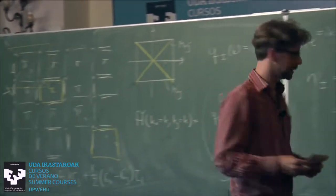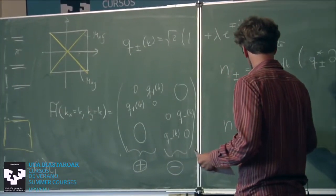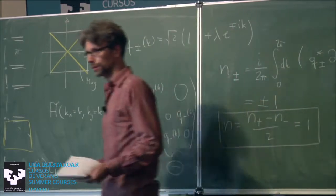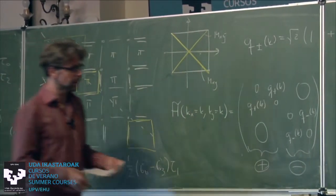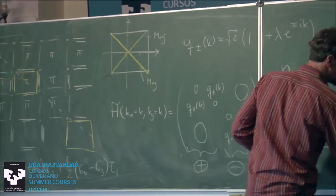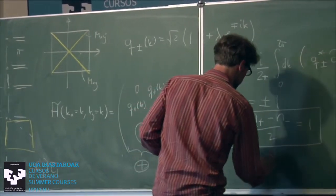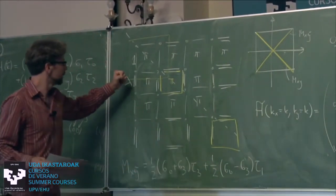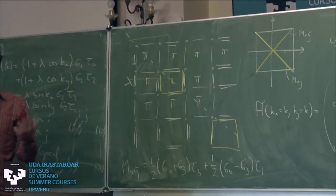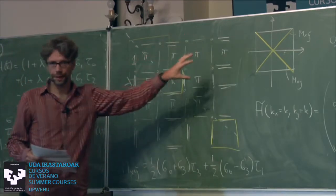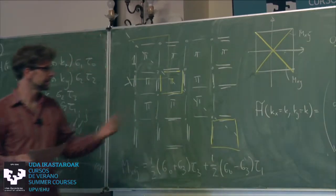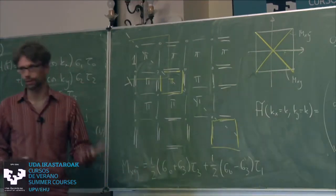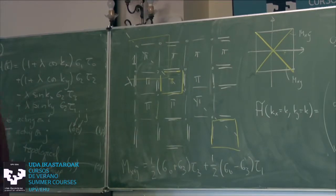This bulk index guarantees the existence of the corner mode as long as the edges are kept gapped. When you manipulate the edges and make them accidentally gapless, there's no well-defined corner mode. But for generic symmetry-allowed edge terminations, the edges will be gapped since nothing prevents them from being gapped.